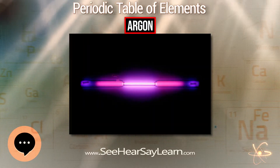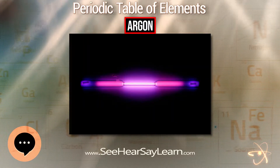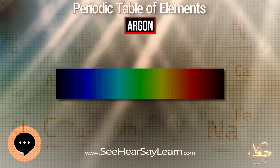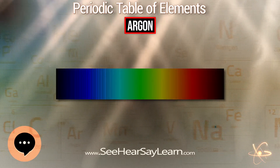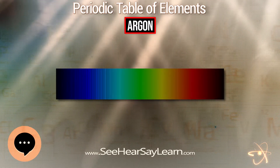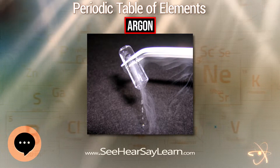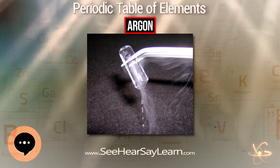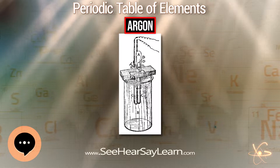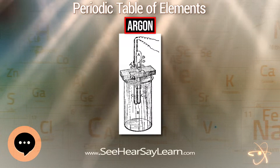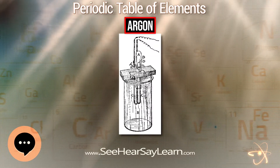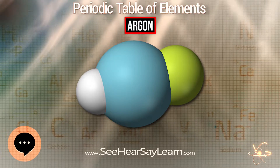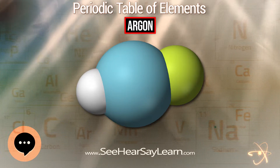The name argon is derived from the Greek word meaning 'lazy or inactive,' as a reference to the fact that the element undergoes almost no chemical reactions. The complete octet in the outer atomic shell makes argon stable and resistant to bonding with other elements. Its triple point temperature of 83.8058 K is a defining fixed point in the International Temperature Scale of 1990.